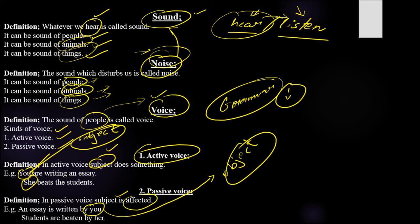In passive voice we have two rules: the subject takes the place of the object, and the object takes the place of the subject. When the subject takes the place of the object, it is no longer called an object — it is called something else we will discuss in the coming slides. So here 'essay' and 'students' are not the doers of the action in passive voice. This was the lecture on sound, noise, voice, active voice, and passive voice. Hope you got the lecture — best of luck, see you next time.